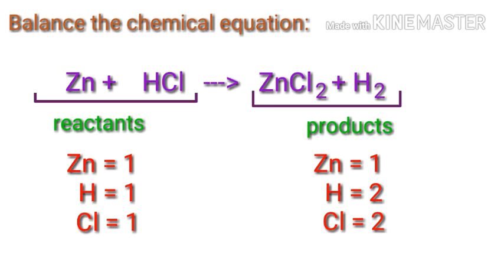A coefficient is a number that we place in front of a chemical formula. In this equation, we need to balance the hydrogen and chlorine atoms. To do this, we need to put a coefficient of 2 in front of HCl.